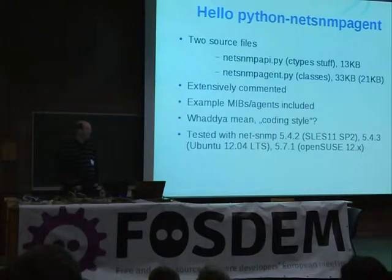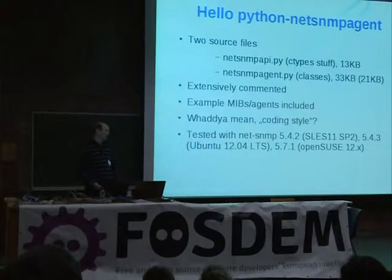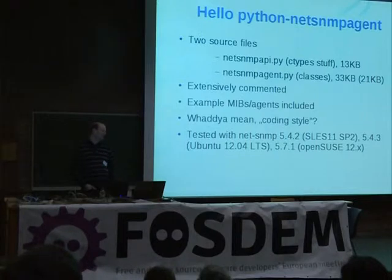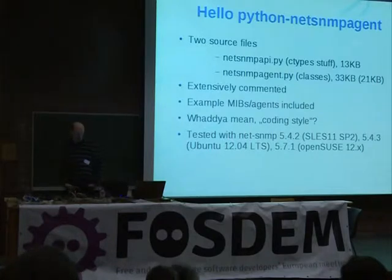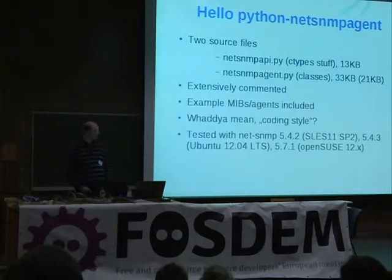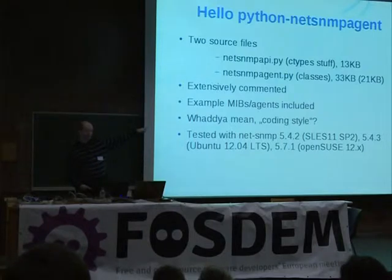Hello, Python Net-SNMP agent. It's pretty simple, actually — just two source files. One has all the ctypes stuff, which means prototypes, as we would say in C, which wraps the API calls — just 13 kilobytes. And on top of it, there's netsnmp_agent.py, the file with the classes. It's not particularly large but extensively commented, which explains why the real code size is one-third less.